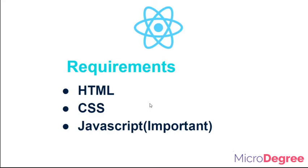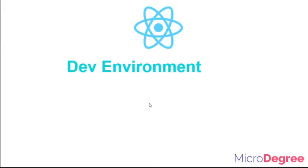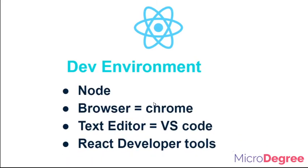Now for the developer environment — what needs to be installed on your machine. First, Node.js must be installed. In the next video, we'll install Node.js and npm. If Node.js is not installed on your system, you cannot build React applications. Also, you need a browser — my preferred browser is Google Chrome.